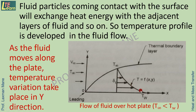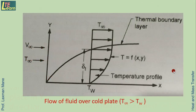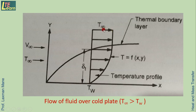As the fluid moves along the plate, temperature variation takes place in the y direction. In the case of flow over a cold plate, Tw is less than T∞. As distance from the leading edge increases, temperature rises from the wall value and eventually equals the free stream temperature T∞. This temperature profile forms the thermal boundary layer.